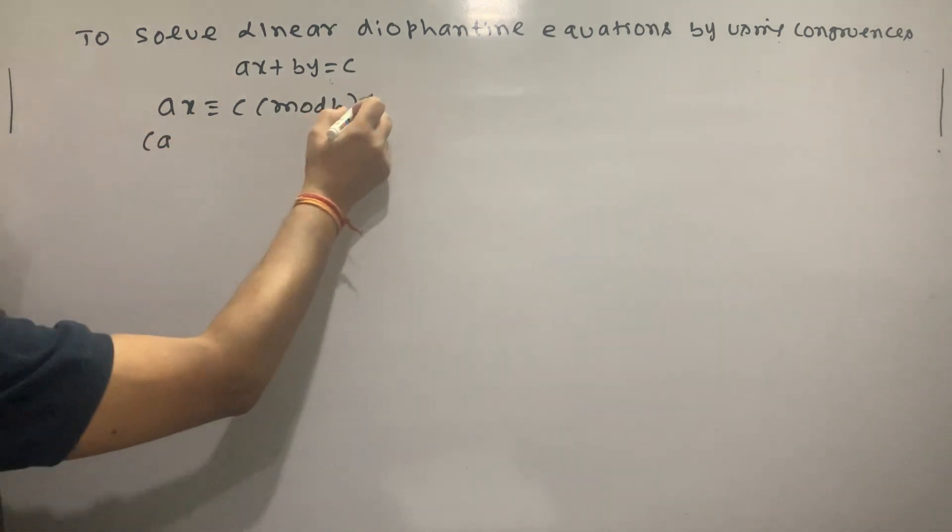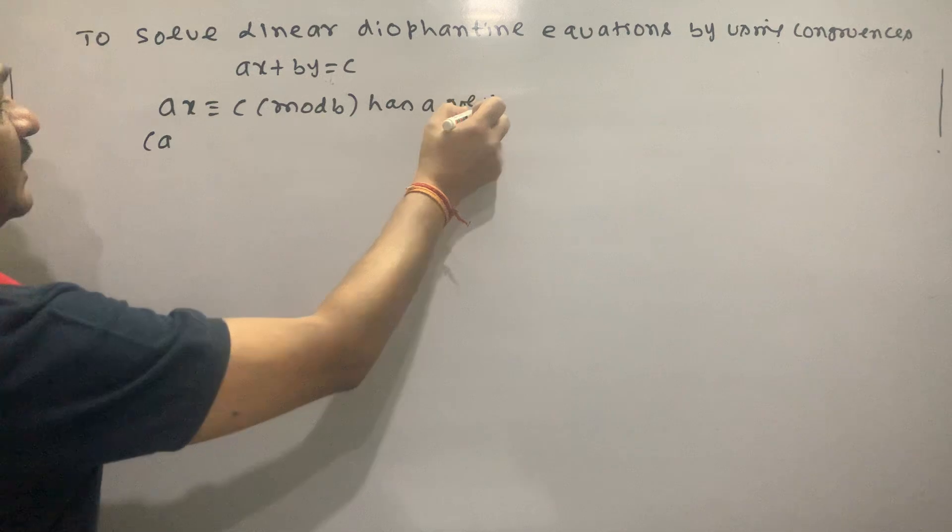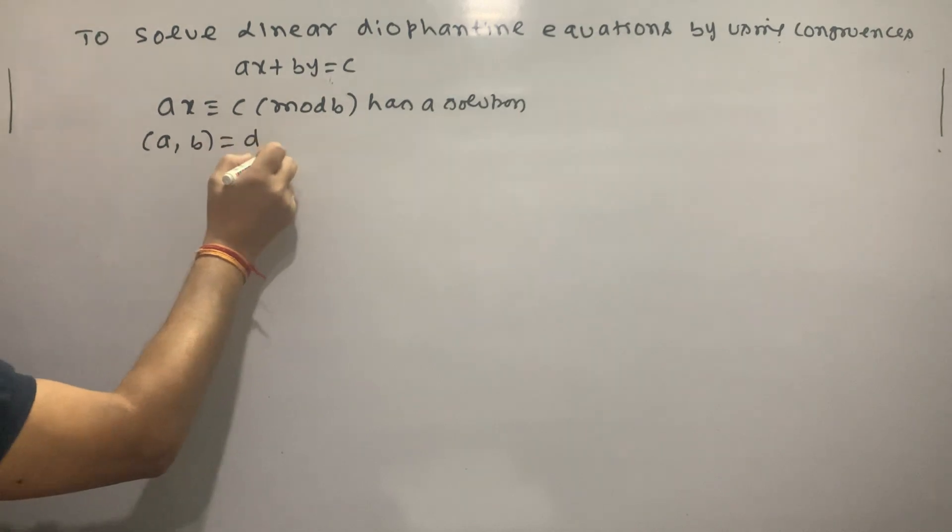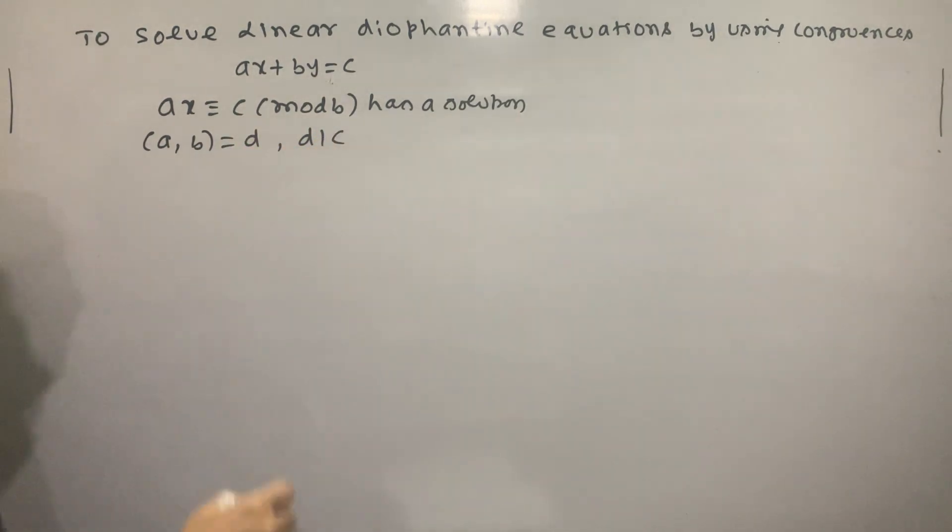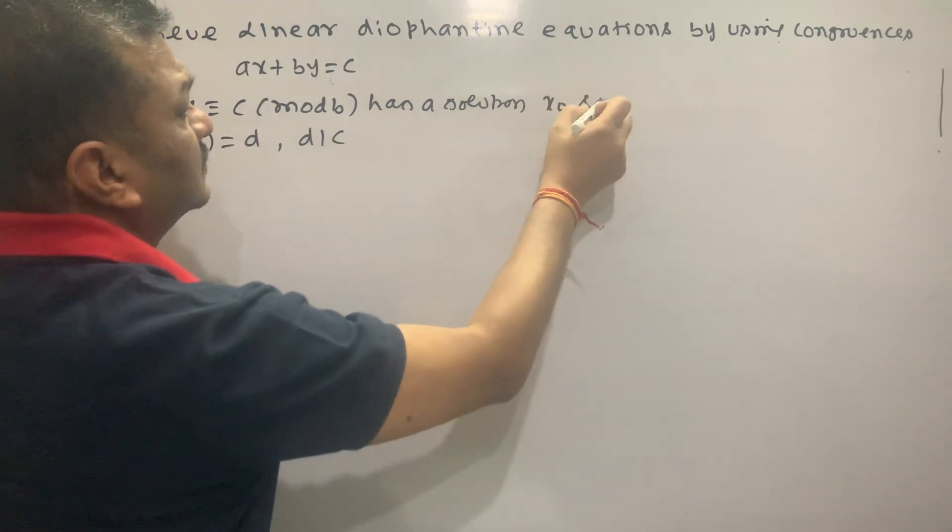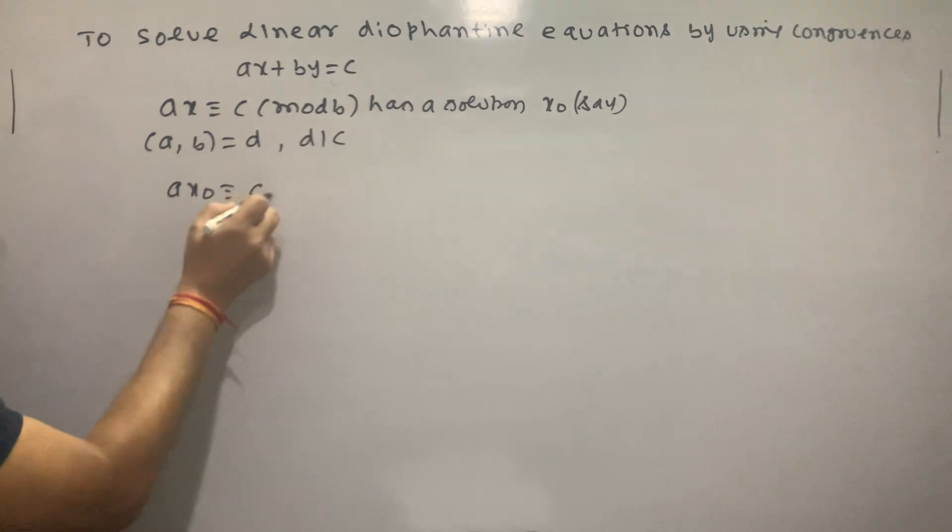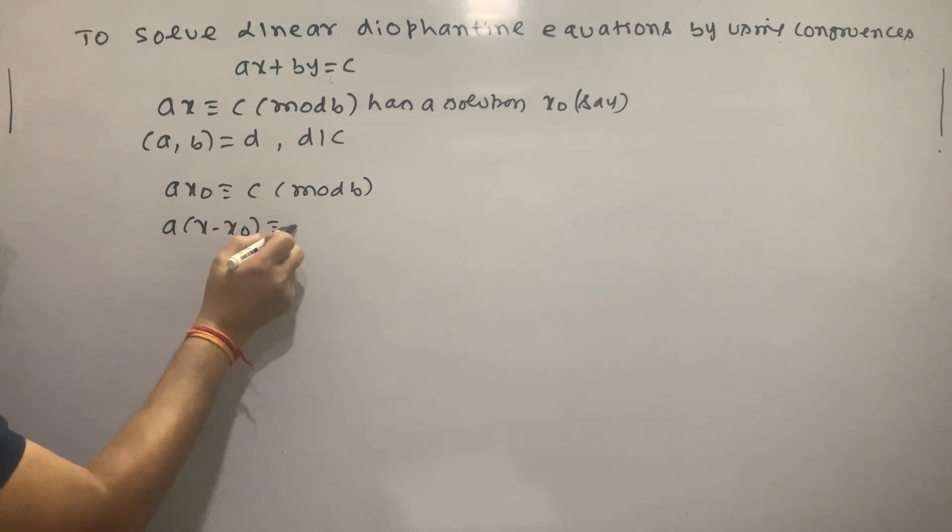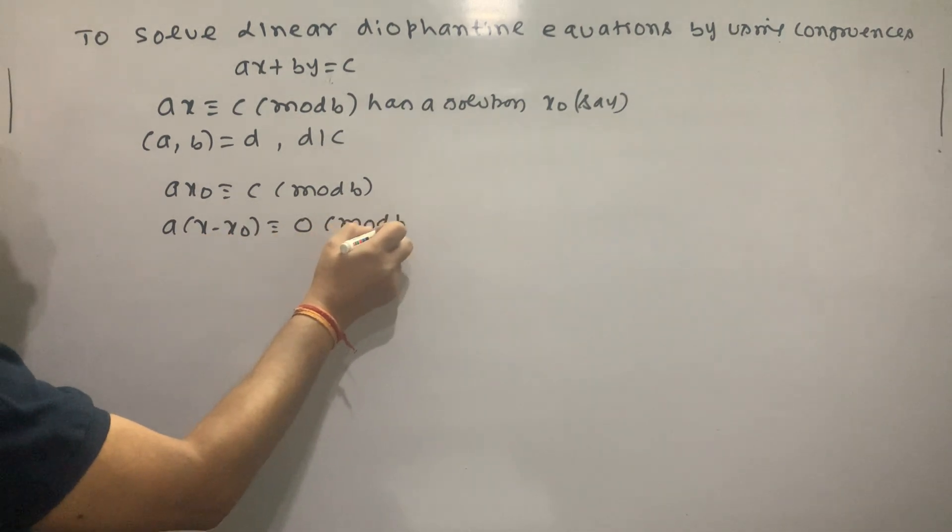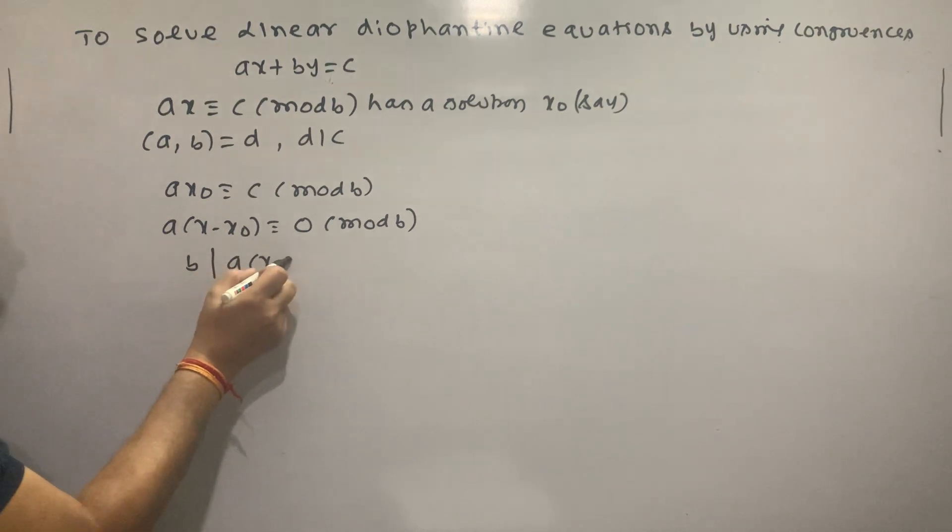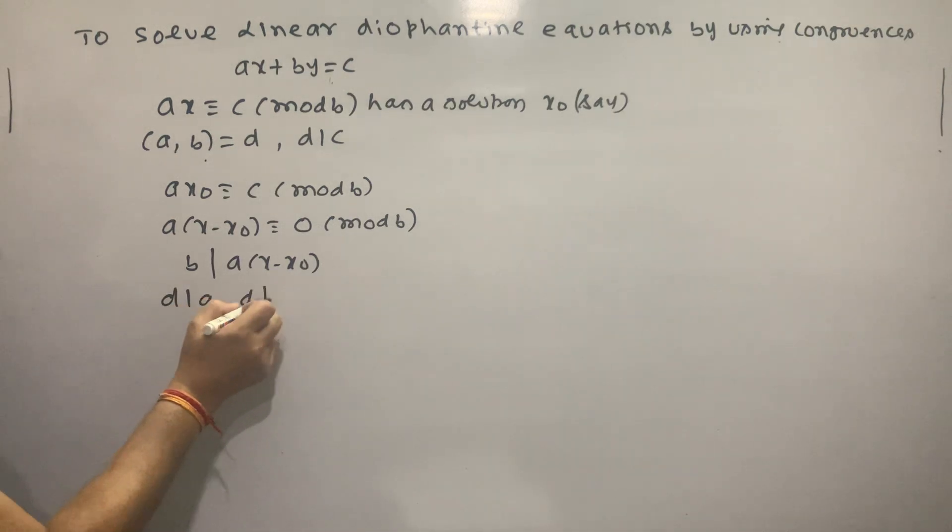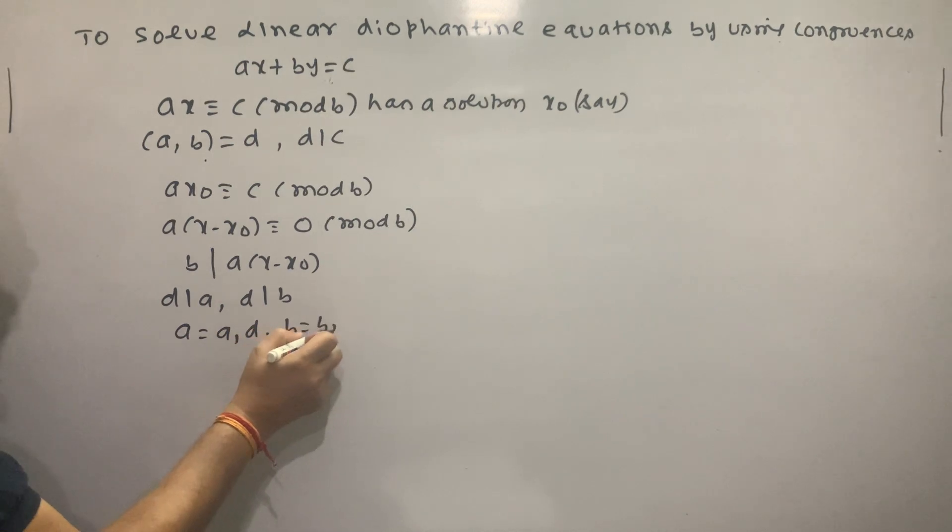This has a solution if A and B have greatest common divisor D and D divides C. Let X naught and Y naught be solutions. Then AX naught congruent C mod B. D divides A, D divides B. A equals A1 times D, B equals B1 times D. A1, B1 have greatest common divisor 1.